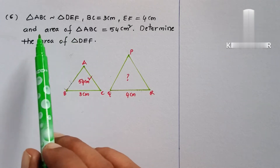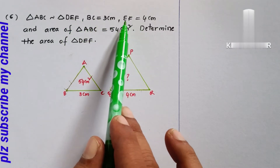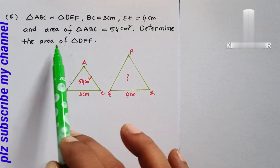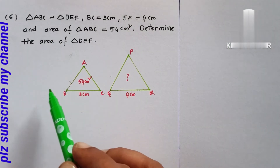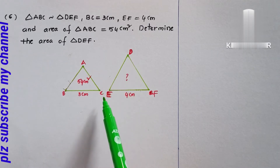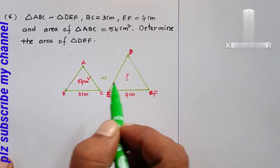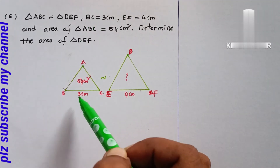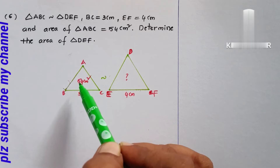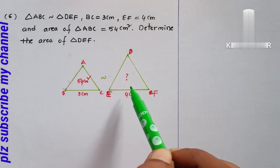Exercise 8.306: Triangle ABC is similar to triangle DEF. BC equals 3 centimeters, EF equals 4 centimeters, and area of triangle ABC equals 54 centimeter square. Determine the area of triangle DEF.